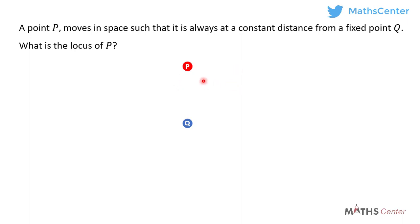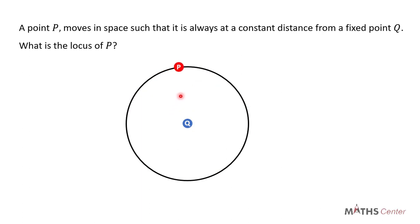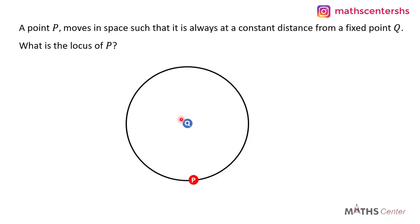If we study the question carefully, we can see that in order for point P to move under this condition, point P will have to move around point K in a circular path with point K at the center of the circle. As point P moves around point K, at any point, point P will be on the circumference of the circle. In a circle, the distance from the center to a point on the circumference — which is the radius — is always constant.